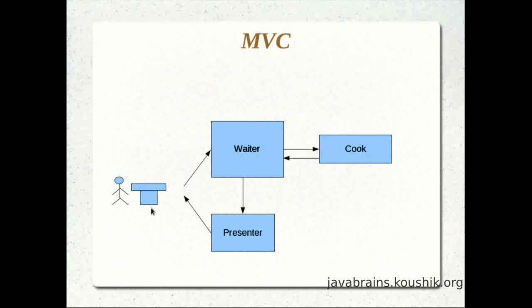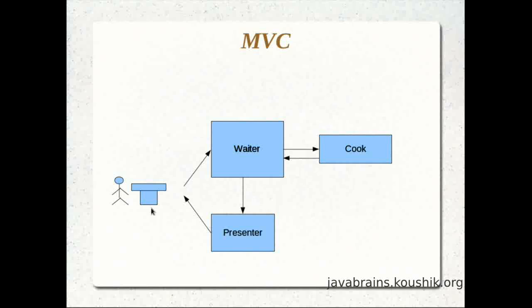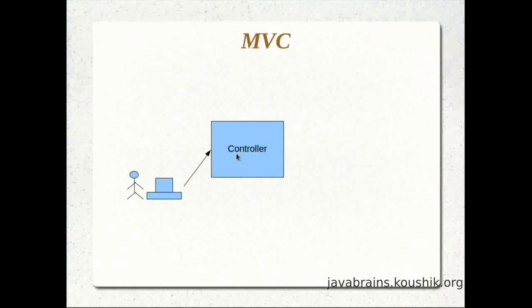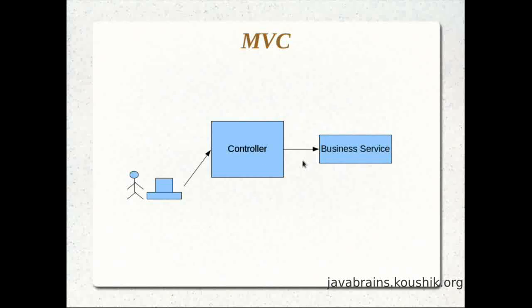Now let's look at how MVC works in a generic scenario. The user makes a request to a web application or a URL. The first entity that takes this request is the controller — the C of MVC. The controller is the wiring behind everything: it knows where to pass the request, what to do with it, and when to send it back. The controller analyzes the request and, depending on it, passes the request to something called a business service. For example, if the request is to pull up a list of all users, the controller does not know how to do that itself.